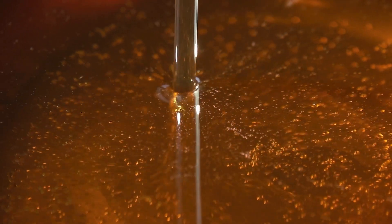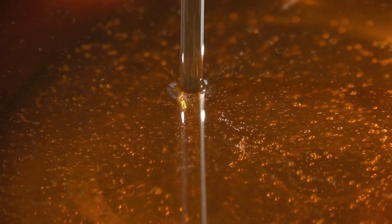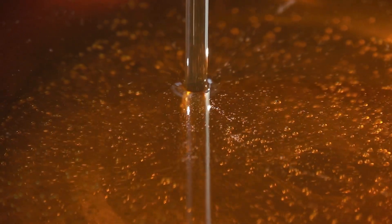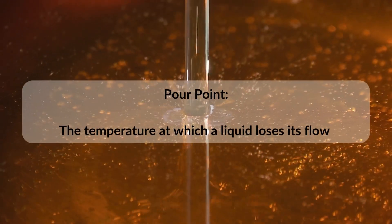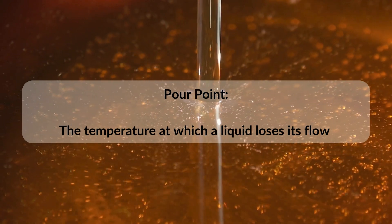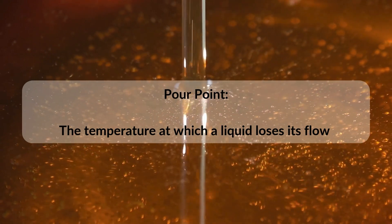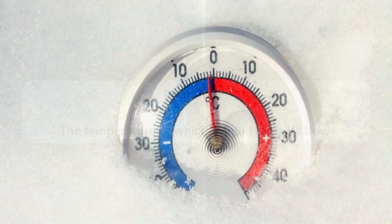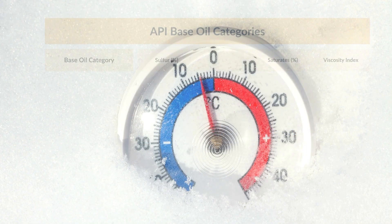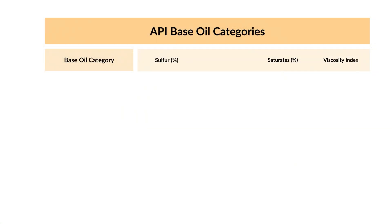The high aromatic and low-wax content of naphthenic oils gives them a lower pour point and better solvency. Pour point is the temperature at which a liquid loses its flow — an important consideration for lubricants in cold operating conditions.